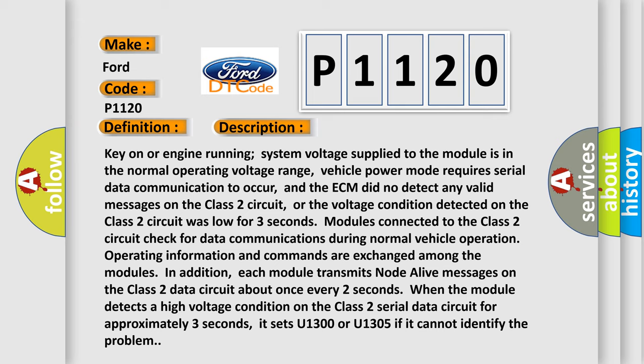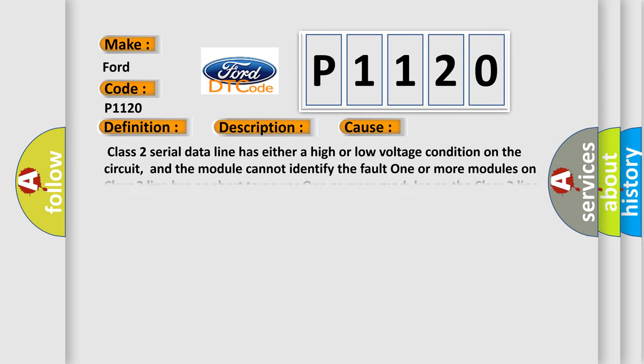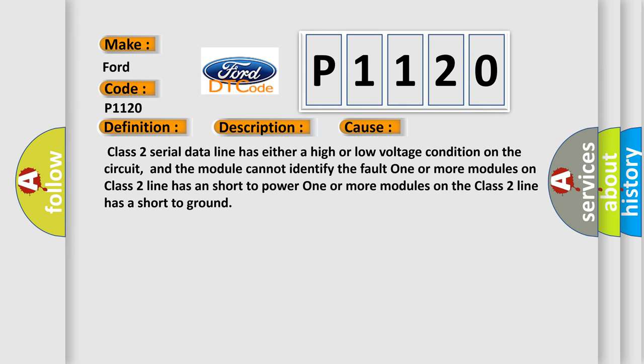This diagnostic error occurs most often in these cases: Class 2 serial data line has either a high or low voltage condition on the circuit, and the module cannot identify the fault. One or more modules on class 2 line has a short to power. One or more modules on the class 2 line has a short to ground.